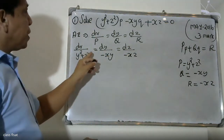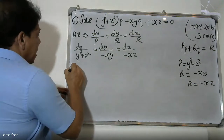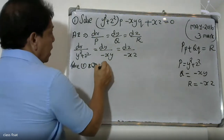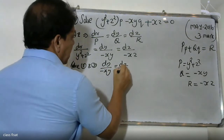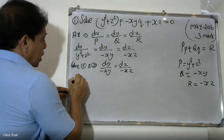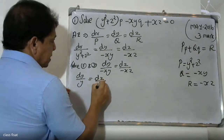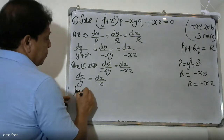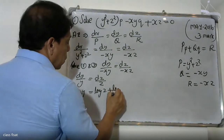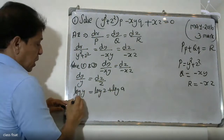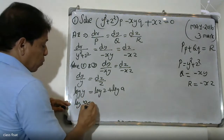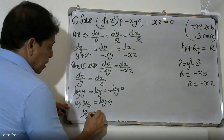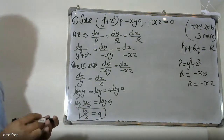We have three ratios. Using the grouping method, take the second ratio and third ratio. dy divided by minus xy equals dz divided by minus xz. Cancelling minus x, dy by y equals dz by z. Integrating: log y equals log z plus log a, so log y minus log z equals log a, giving log(y/z) equals log a. Therefore y by z equals a, the first constant.